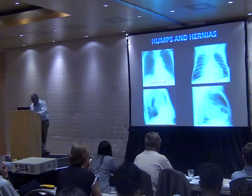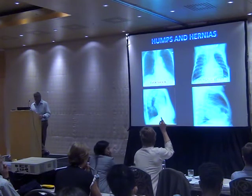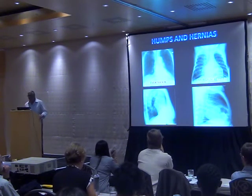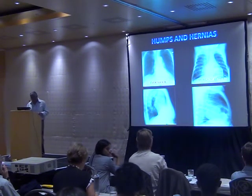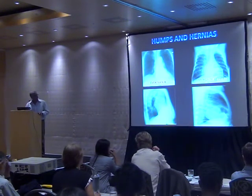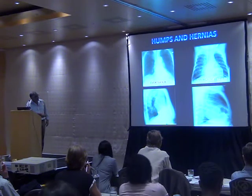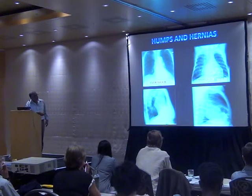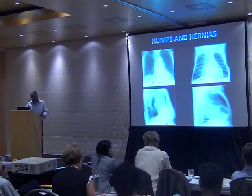On the lateral projection, the eventration is seen anteriorly, and we can confirm it is on the right side. We can see a right-sided hump that is continuous with no bowel running into the chest, whereas in a Morgagni hernia there are loops of bowel or cystic lucencies behind the heart visible on the lateral projection.